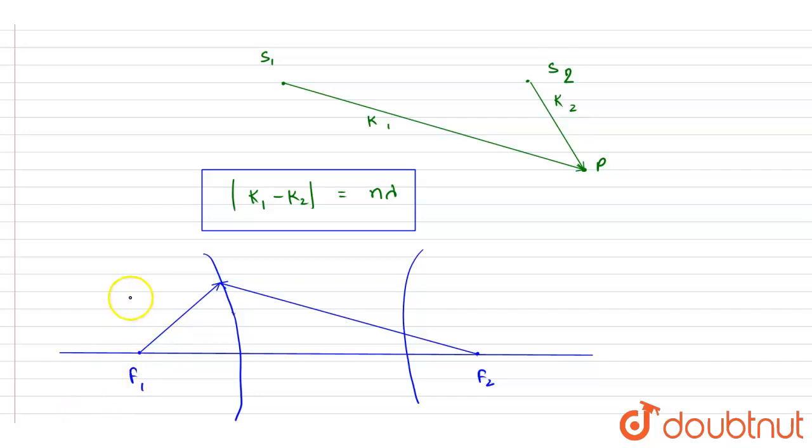constant difference. It means if I say this is d1, d2 for any point, if you see that |d1 - d2|, it will have a constant difference, right? If I say this as x, so it will be constant. So basically, this is an equation of hyperbola.